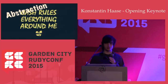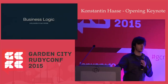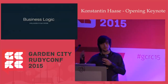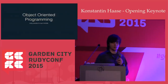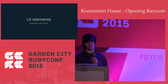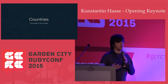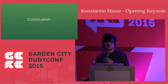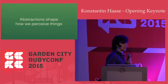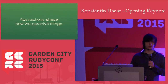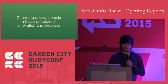Abstractions are just everywhere. But abstractions only exist in our mind. Business logic is not something the computer actually knows about — the computer only has transistors. Business logic exists in our minds. Object-oriented programming exists in our minds. Colors, UI elements, countries — this doesn't mean they don't exist or are bad, but they only exist as concepts in our minds. Conclusion: abstraction happens in our minds. All abstractions. Abstractions shape how we perceive things. Changing abstractions is the basic principle of innovation and progress. Thank you, and may the force be with you.